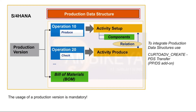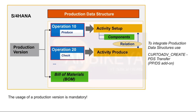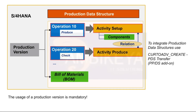You can create a Production Data Structure in PPDS from the SAP S/4HANA production version that determines the detailed information required for producing a product. Each PDS has one or more operations. Each operation includes one or more activities, the components consumed by the activity, and the resources used in sequence within the operation.